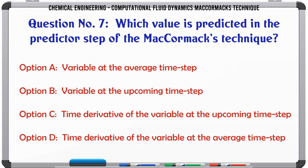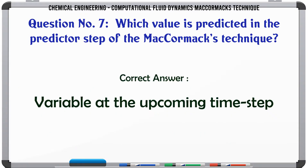Which value is predicted in the predictor step of the MacCormack technique? A. Variable at the average time step. B. Variable at the upcoming time step. C. Time derivative of the variable at the upcoming time step. D. Time derivative of the variable at the average time step. The correct answer is the variable at the upcoming time step.